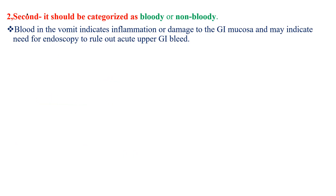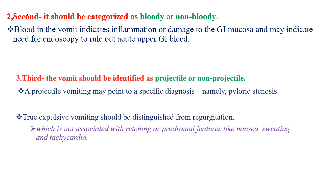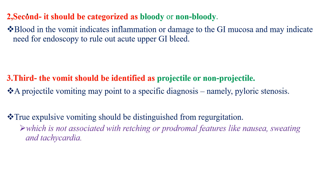Second, vomiting should be categorized as bloody or non-bloody. Bleeding in the vomit indicates inflammation or damage to the GI mucosa and may indicate the need for endoscopy to rule out acute upper GI bleeding. Third, the vomit should be identified as projectile or non-projectile. Projectile vomiting may point to a specific diagnosis, for example, pyloric stenosis.